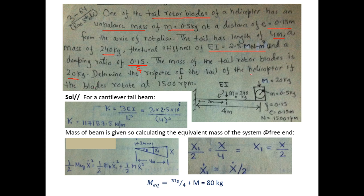We need to find the response of the tail of the helicopter if the blade rotates at 1500 RPM. The tail of a helicopter is modeled as a cantilever beam. The body of the helicopter is fixed at one end. The tail has a length of 4 m; its center of gravity (mass 240 kg) acts at 2 m. At the free end, the rotating blade of mass 20 kg contains an unbalanced mass of 0.5 kg at eccentricity 0.15 m, rotating at 1500 RPM.